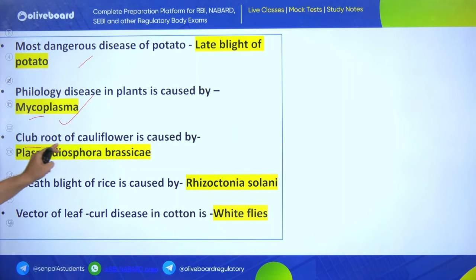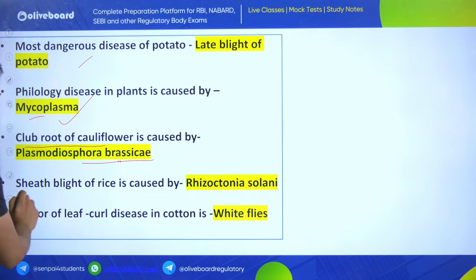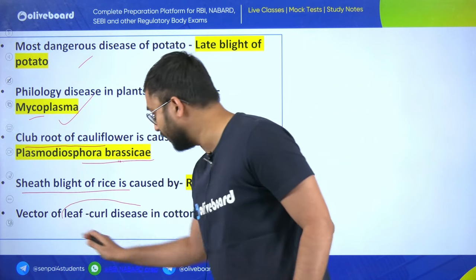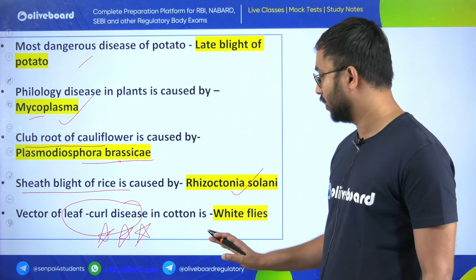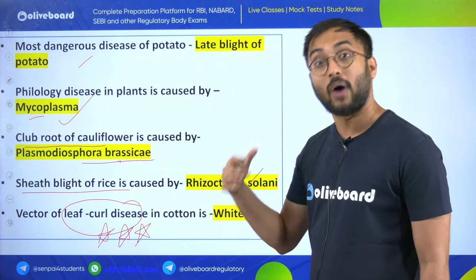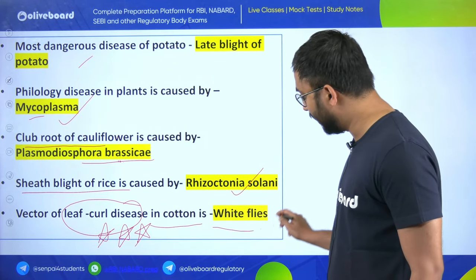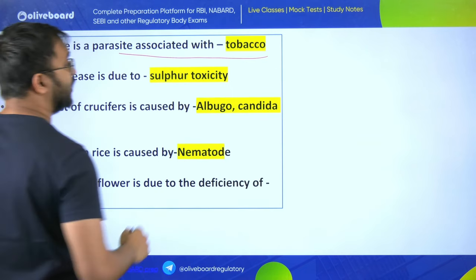Club root of cauliflower is caused by Plasmodiophora brassicae - cauliflower belongs to the Brassica family. Sheet blight of rice is caused by Rhizoctonia solani. Leaf curl disease is a very important disease that repeats in various agriculture exams. Know about the vector and causative agent. Leaf curl disease in cotton is caused by whiteflies. Orobanche is a parasite associated with tobacco.